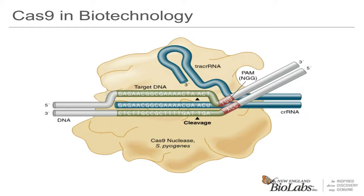In biotechnology, one of the tricks that has been used is to combine the crRNA and tracer RNA into one single guide RNA, or as we refer to it, sgRNA. This was a really great advancement as it simplified the process, as only one RNA is needed and there is no annealing necessary.